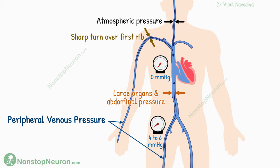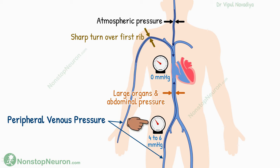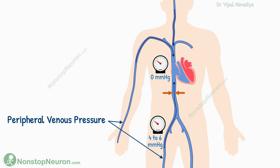Now let's talk about what can bring about changes in peripheral venous pressure. First, with increasing right atrial pressure, it becomes more difficult for blood in veins to flow forward, so there is a corresponding rise in pressure in peripheral veins too. Next, intra-abdominal pressure can affect the pressure in veins in the legs. Normally, this pressure is about 6 millimeters of mercury. It increases in conditions like pregnancy, obesity, large tumors, etc. That compresses veins in the abdomen, so pressure starts building up in leg veins too.